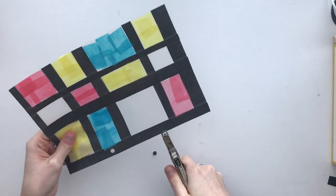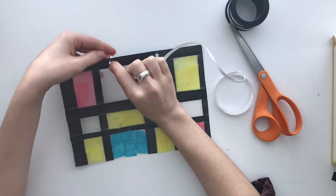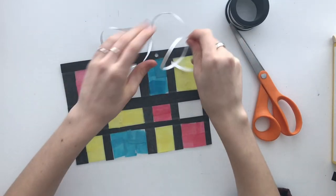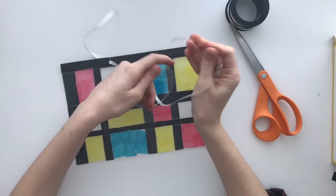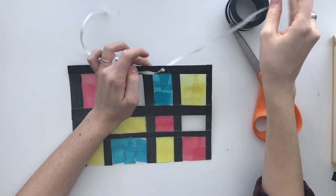Use a hole puncher to punch two holes on the top piece of cardstock. For the next step, you can use yarn, ribbon, or whatever you have to tie a loop through the holes that you just punched so you can now hang your suncatcher in a window.